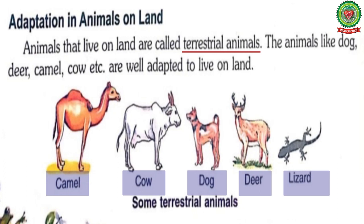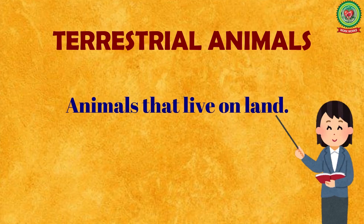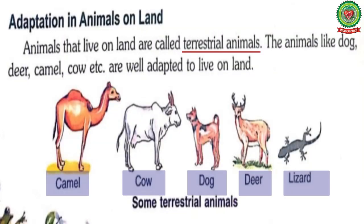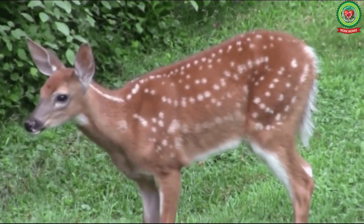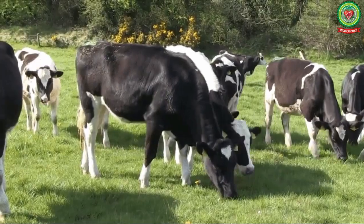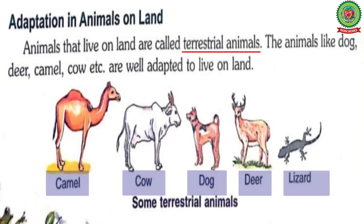Animals that live on land are called terrestrial animals. Underline the word terrestrial animals and the definition is: animals that live on land. The examples of animals which live on land are dog, deer, camel, cow, and these animals are well adapted to live on land.